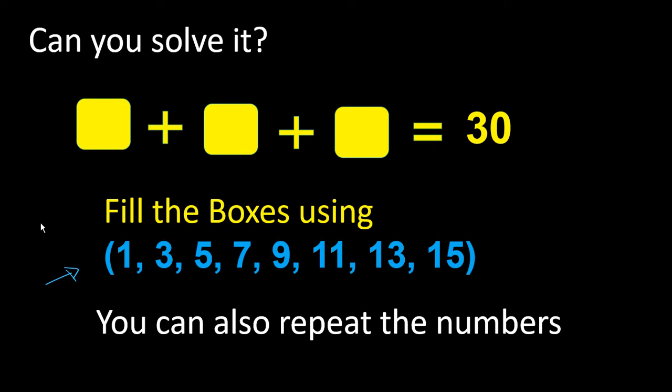By simply thinking, if you add three of the odd numbers, you will get an odd number. So 30 is not possible by direct logic - you have to think out of the box. Let's see some of the wrong solutions that are getting circulated.